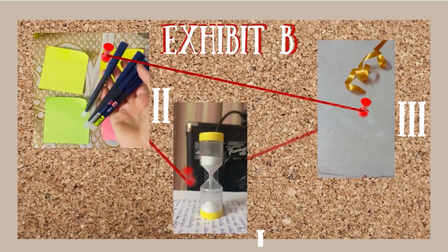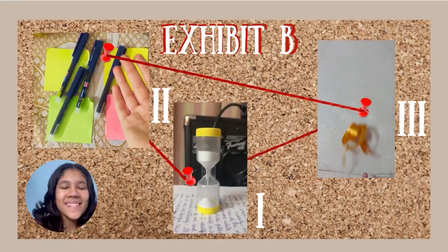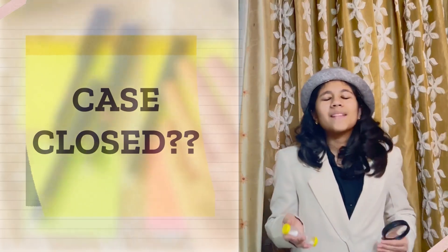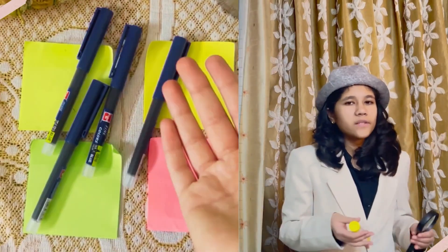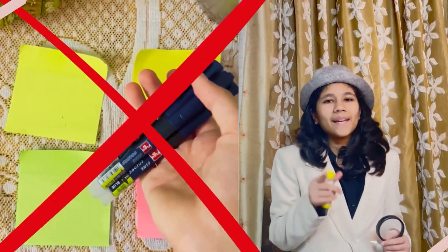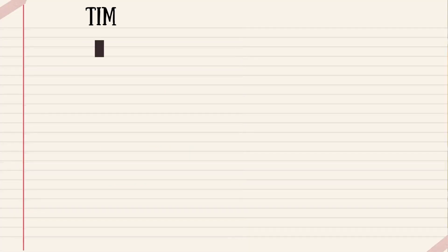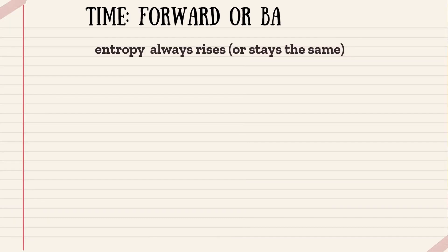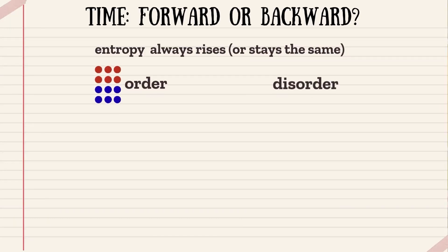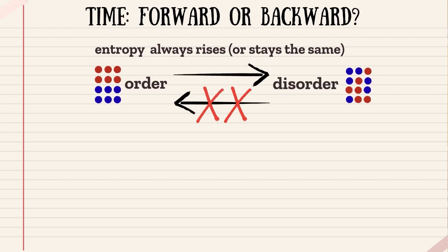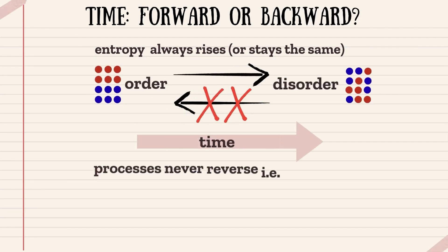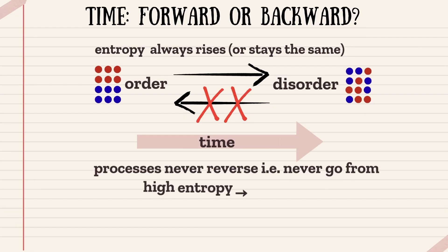Now, exhibit B. Which clip do you think is reversed? It's the second one. But it doesn't really disobey any laws of physics — the pieces happen to bounce back with the right velocity. Yet we never see this happening in real life. Why? Well, since entropy always rises, things always fall into disorder, like the ribbon, not the other way around, like the pens. So as time moves forward, entropy ensures processes never reverse, or go from high to low entropy. Which is why it is called the arrow of time.